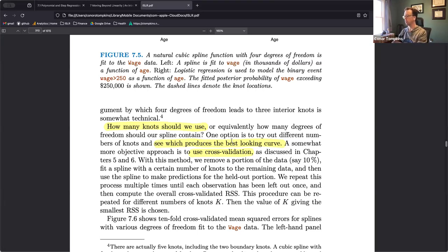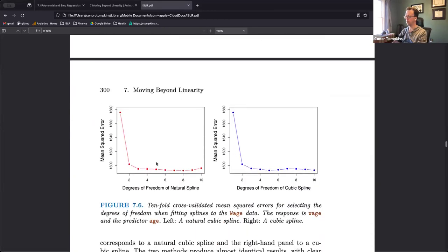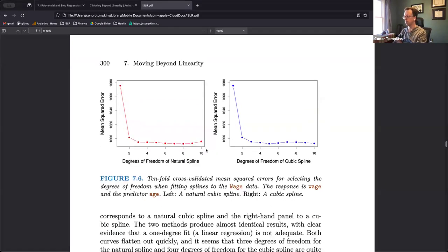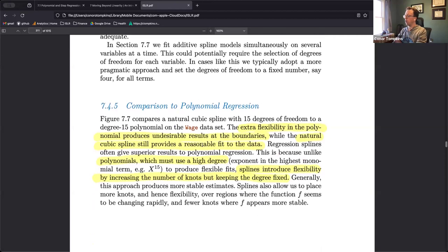You can either eyeball it and choose the combination of knots that makes the best looking curve, or you can use cross validation. We can see that they do some cross validation here. There's diminishing returns on the number of degrees of freedom on these things, so typically you can get the most gain in the first couple degrees of freedom and everything after that is probably going to make your model overfit.